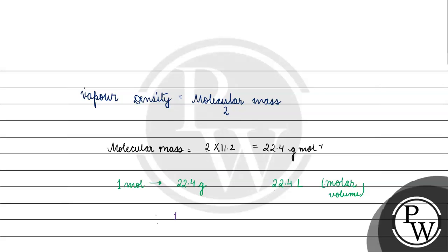For this particular gas, 1 gram of gas, what is the volume? 22.4 liter by 22.4. How much is it? 1 liter.